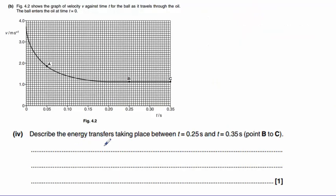Part IV asks us to describe the energy transfers taking place between point B and point C. You'll see here that the ball is travelling at a constant velocity during this period. Therefore, there is no change in kinetic energy. However, the ball is still falling.